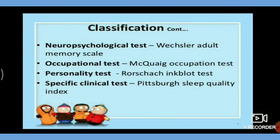Neuropsychological tests are designed to examine a variety of cognitive abilities including sensation, perception, and language. One example is the Wechsler Adult Memory Scale, which can be used with people from age 16 through 89 years to measure memory functions like orientation, control, and logical memory.